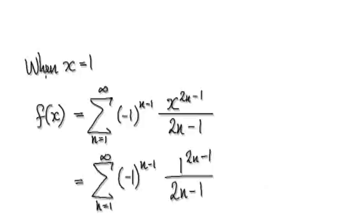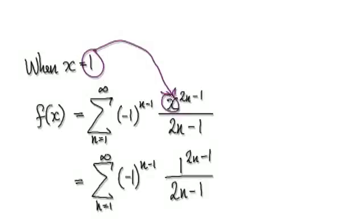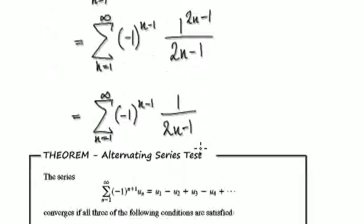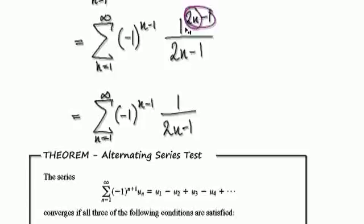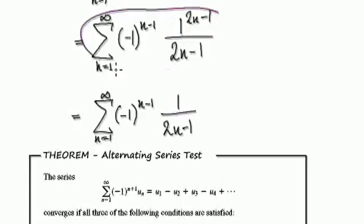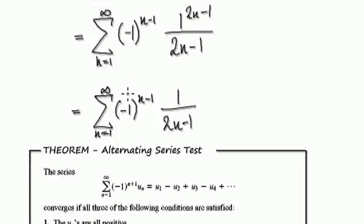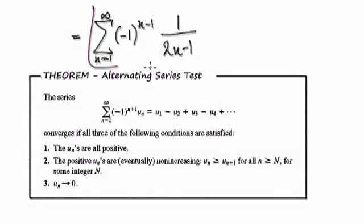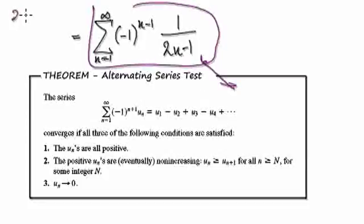Let's look at the case when x equals 1. When x equals 1, we need to put this into here. That will then become 1, and then this stays exactly the same. So now it's just a matter of tidying this up. n moves from 1 to infinity. When you times 2 it would be an even amount; take away 1, that would be an odd amount. 1 to the power of anything would be 1. So you can simplify this thing here as being 1. This thing here will then become this.